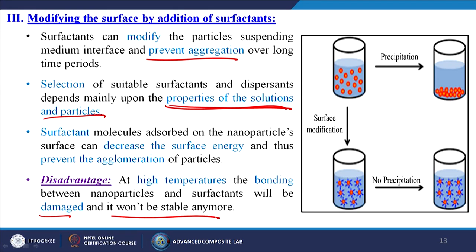The surfactant attaches to the nanoparticle surface and prevents the particles from sticking together. However, at high working temperatures there is a disadvantage: the surfactant coating may come off the nanoparticles or degrade, making the system unstable. That is one of the drawbacks of this particular process.